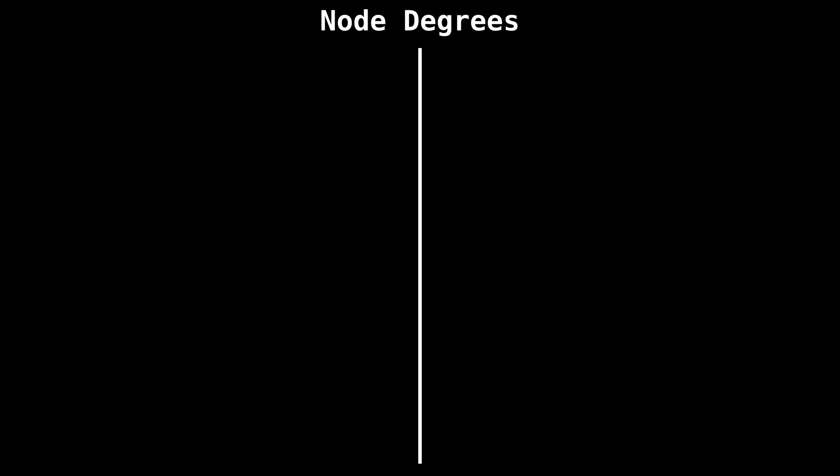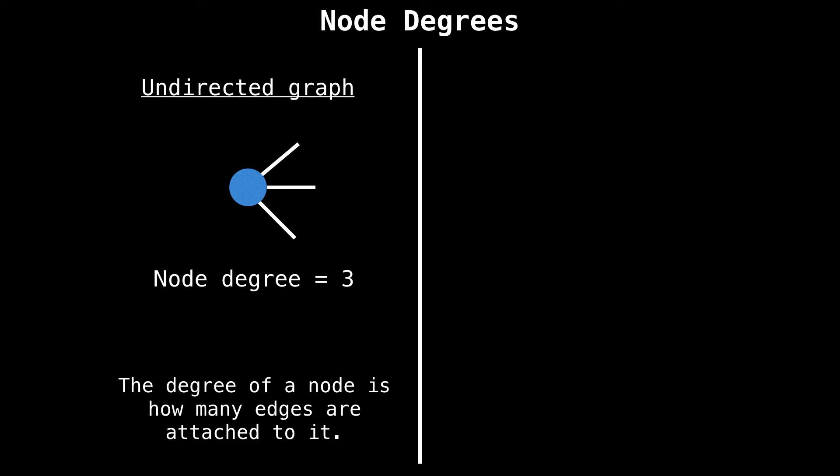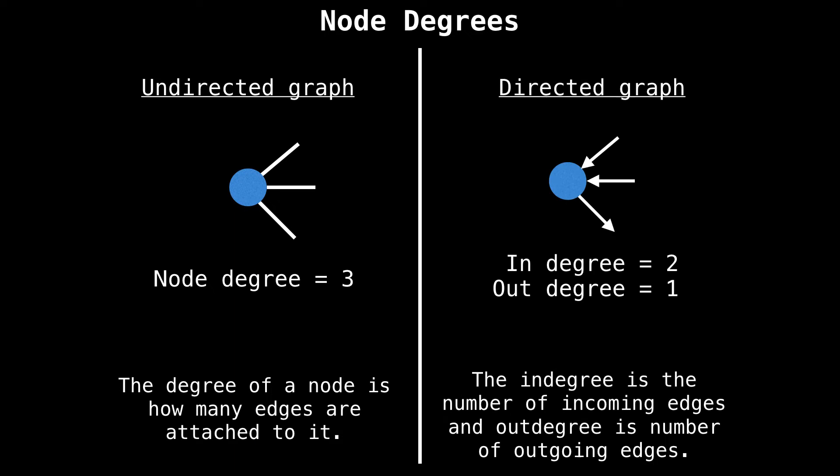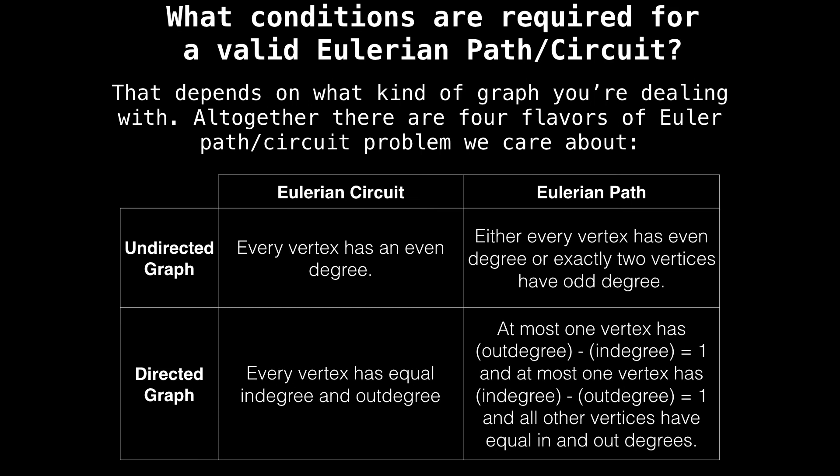So I want to have a quick look at that before coming back to this table. The degree of a node means different things depending on whether the graph we're dealing with is directed or undirected. In an undirected graph, the node degree is simply how many edges are attached to a particular node. The blue node in this picture has three edges attached to it, so its degree is three. In a directed graph, there are two forms of node degrees: there are in degrees and out degrees because the edges are directed. The in degree is the number of incoming edges to a node, and the out degree of a node is the number of outgoing edges from that node. So in the example on the right, the in degree of the node is two, while the out degree is one.